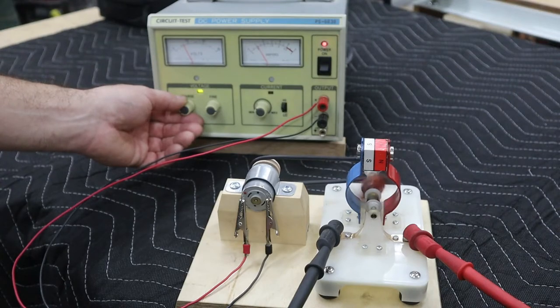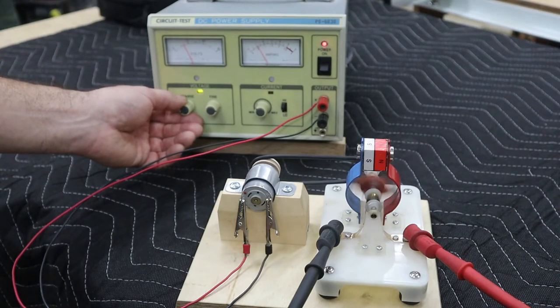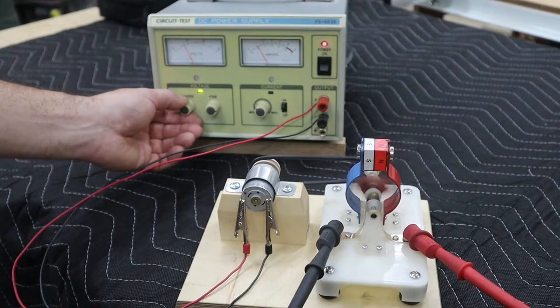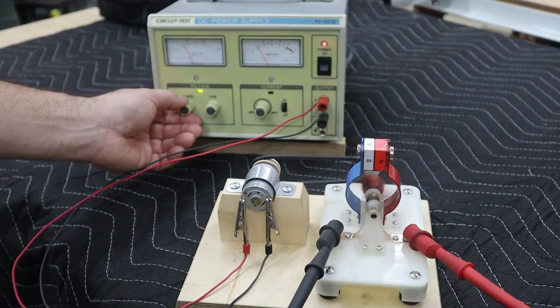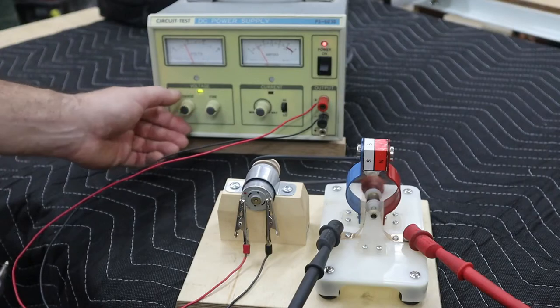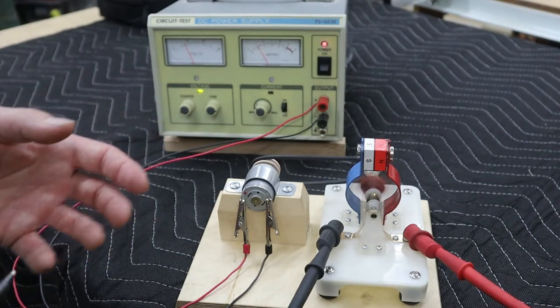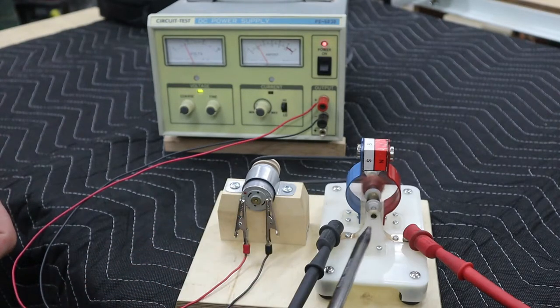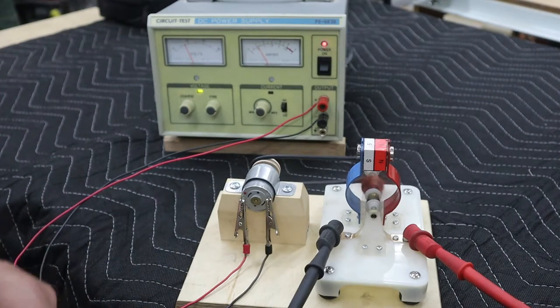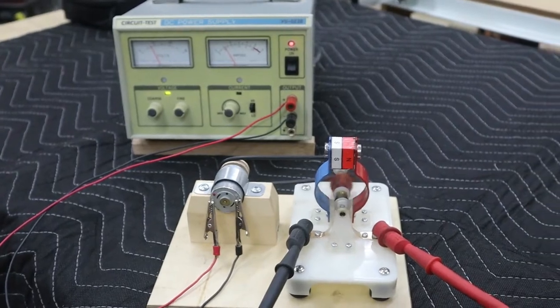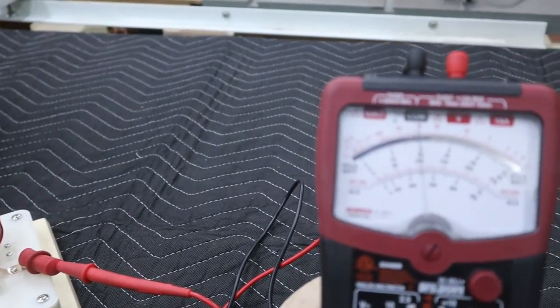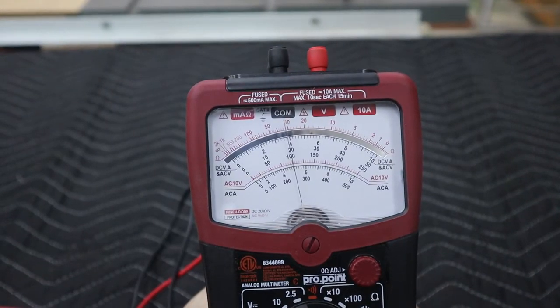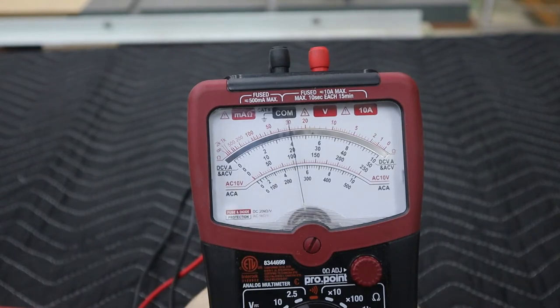So you can see as I increase the voltage, a little bit more, small increments. Now the audio should pick up that we are moving a lot faster. The camera should be able to see that the speed of rotation has picked up. And as I pan to the right and we look at the multimeter, we can see that I am now producing almost a full volt of electricity.